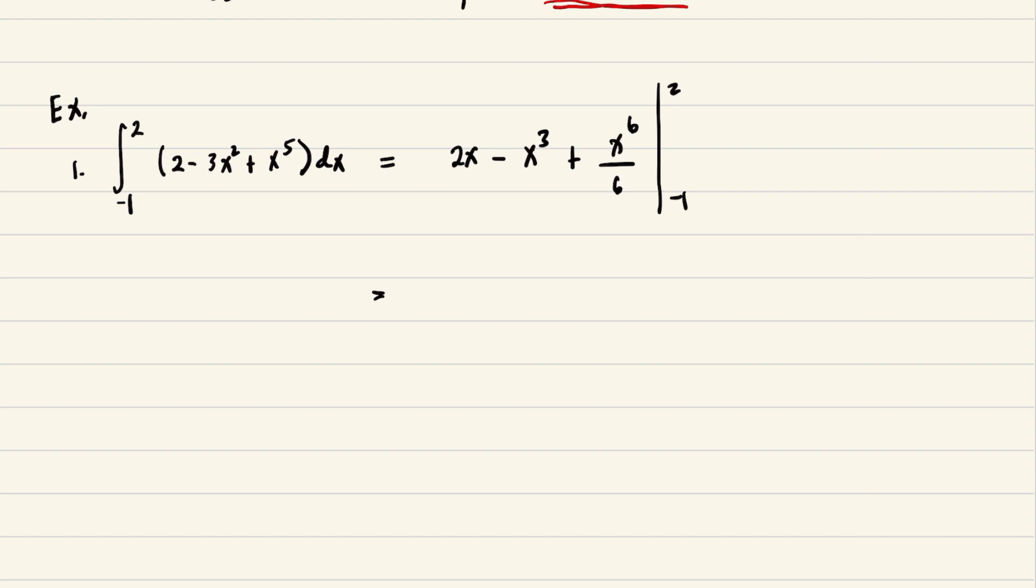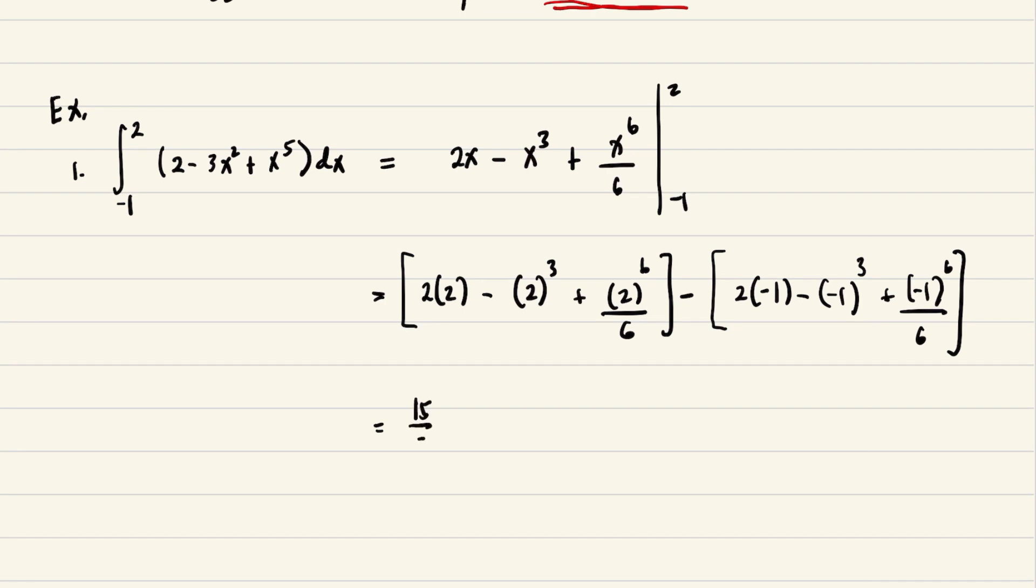The next step, we will evaluate that with respect to 2. So it's 2 times 2 minus 2 cubed plus 2 raised to 6 over 6. And we will subtract that evaluated at -1. So we have 2 times -1 minus -1 raised to cube plus -1 to the 6 over 6. That's equivalent to 10 over 2.